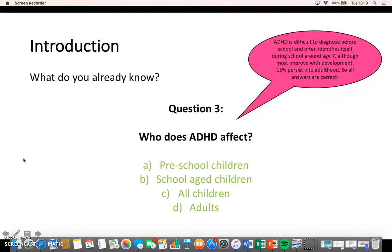When children are all together in school, you can identify those who are too hyperactive and showing abnormal behaviour compared to their cohort. Around 15% will carry symptoms into adulthood and transfer to adult mental health services. Because of its genetic predisposition combined with environmental factors, ADHD can affect people at any age.